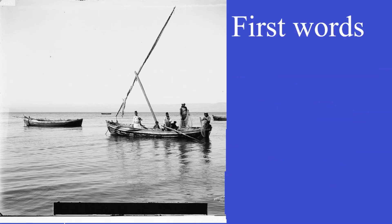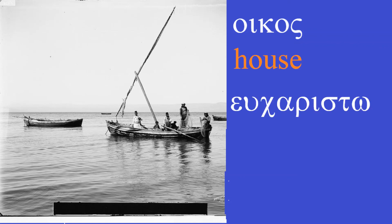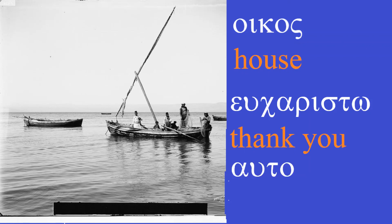In addition to learning how we pronounce vowel combinations called diphthongs, we now have our first three Greek words: 'ikos,' which means 'house'; 'efharisto,' meaning 'thank you'; and 'afto,' meaning 'it' or 'itself.' Thank you so much for watching, and I hope to see you in the next lesson.